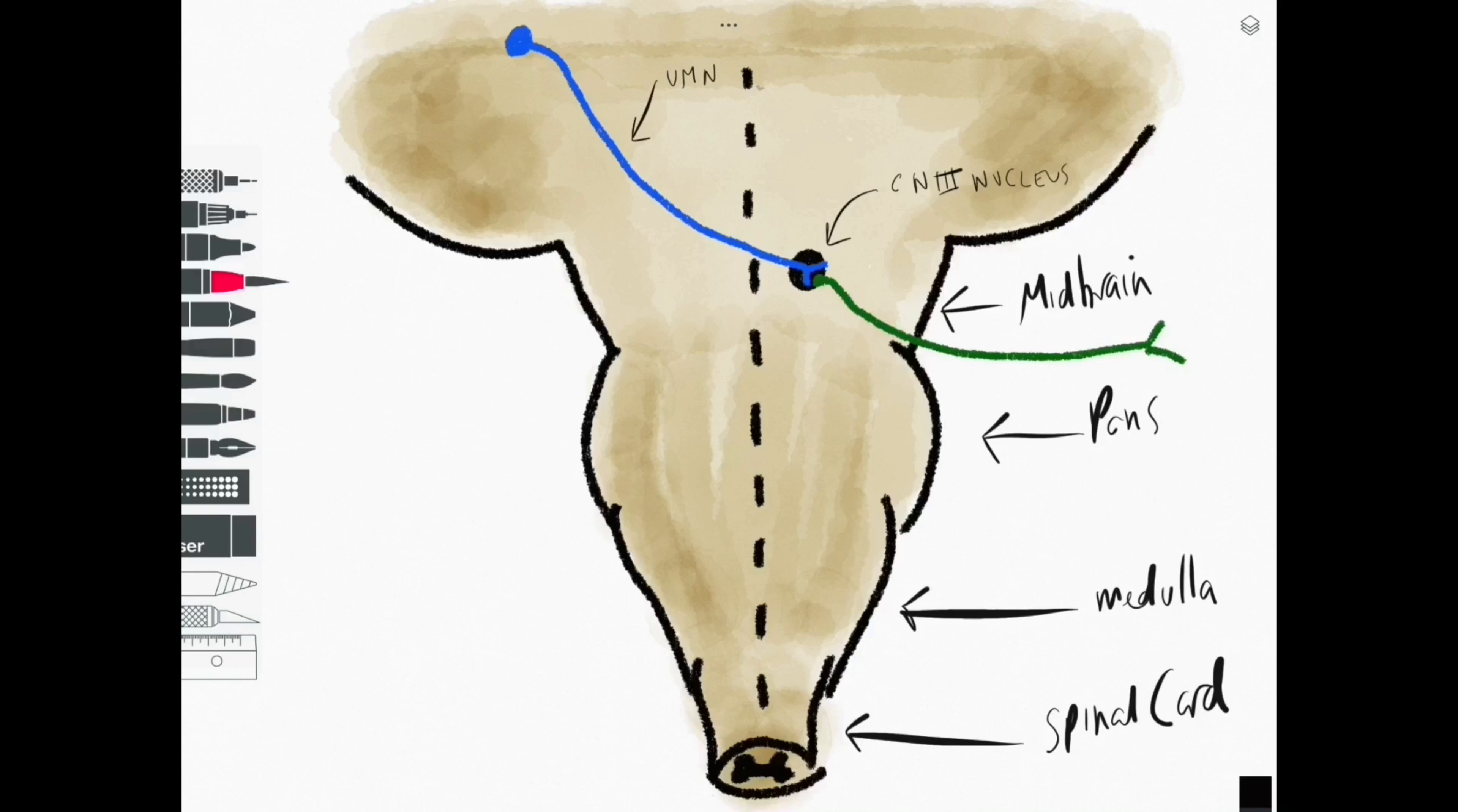So now we need to draw on our corticospinal tract that's now coming on in yellow.